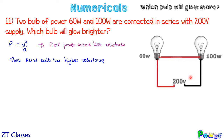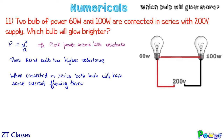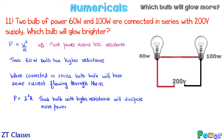In series, the current through both bulbs is the same. Since the current is the same through both, I'll use the formula P = I²R. With the same current flowing, power is proportional to resistance. So the bulb with higher resistance will glow more, and the bulb with lower resistance will glow less.